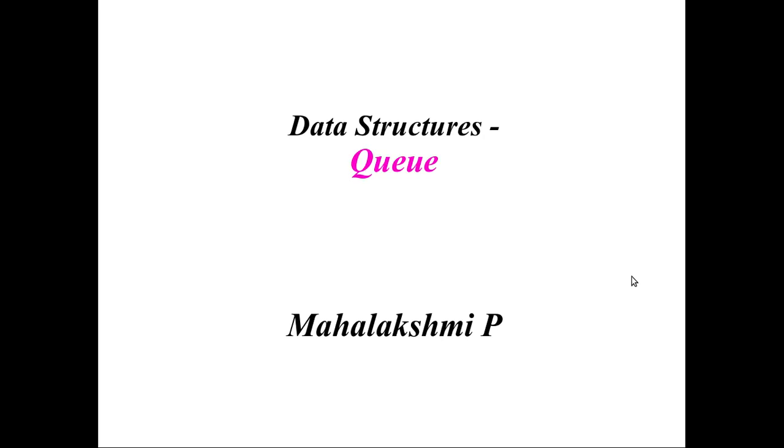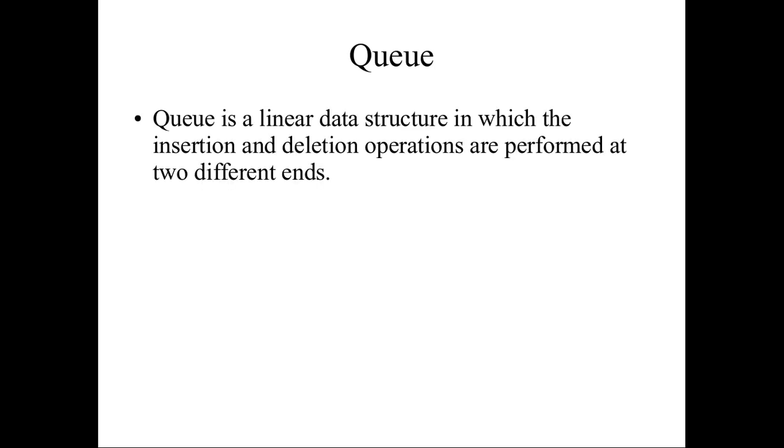Today we will see about the queue data structure. Everybody knows the meaning of queue in general. For example, if you take a shop and you want to purchase something, there is a queue — whoever is standing first will get the product first, whoever is standing last will get the product last. So the queue follows the rule: first in first out, or you can say last in last out. That same rule is followed in the queue data structure.